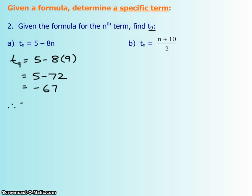Therefore, the ninth term is negative 67. So the term value is negative 67. And let's just try it again. This is pretty straightforward.